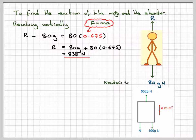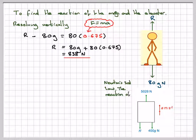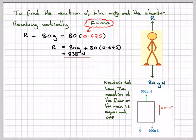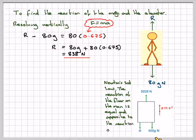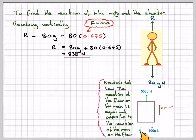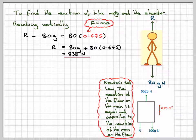Alternatively, we can consider the forces acting on the lift. We've got this force acting upwards and these forces acting downwards. This reaction will act downwards due to Newton's third law, because the reaction of the floor on the man is equal and opposite to the reaction of the man on the floor.